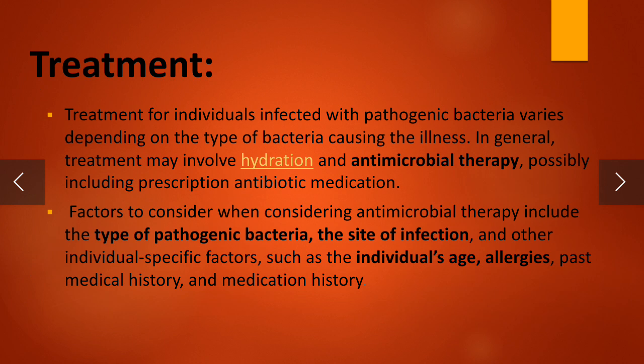Treatment for individuals infected with pathogenic bacteria varies depending on the type of bacteria causing the illness. In general, treatment may involve hydration and antimicrobial therapy. Factors to consider when using antimicrobial therapy include the type of pathogenic bacteria, the site of infection, and individual-specific factors such as age, allergies, past medical history, and medication history.